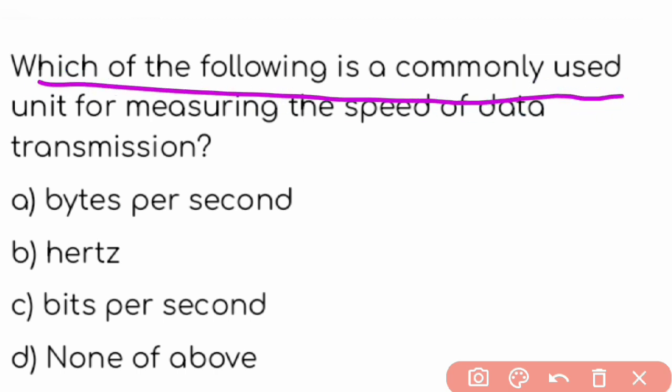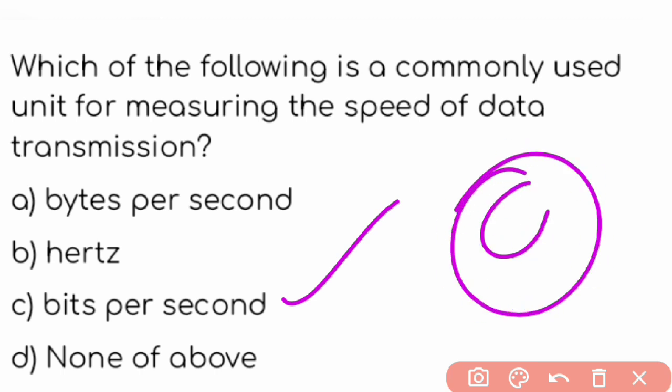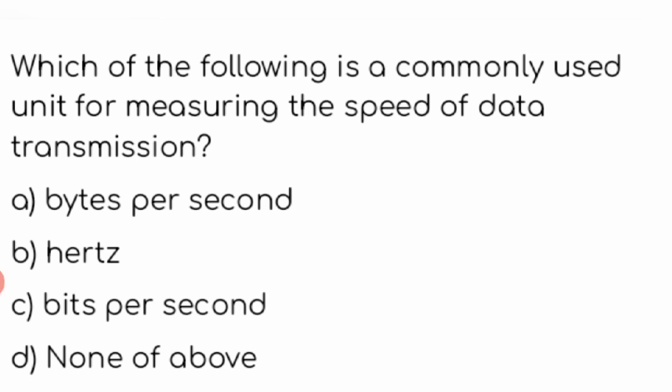Which of the following is a commonly used unit for measuring the speed of data transmission? The answer is bits per second. Option C is the right answer. Next question.